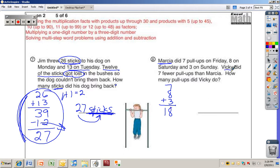And then it says Vicky did 7 fewer. That's the subtraction problem. We get 11. And you should write 11 pull-ups. Notice it says how many pull-ups. So my answer is 11 pull-ups.